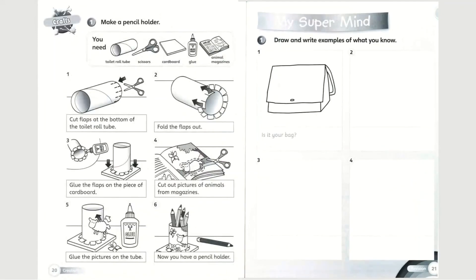For page 20, you do not need to do this, but as this is a craft page, if you want to try using a toilet roll to make a pencil holder, you can go ahead. For the last page of your Supermind book, page 21, it is 'My Supermind.'